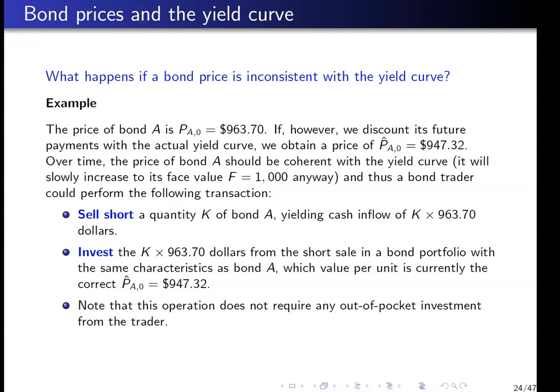If prices increase, A-hat will increase more than A. So even if the trader loses on the short sale, he makes far more on the correctly priced purchase. If prices go down, profits from the short sale exceed the loss on the purchase. The trader invests K × $963.70 into assets worth $947.32. After one year, both prices converge to P1. The profit on the short sale is K × $963.70 minus K × P1; the return on the bond portfolio is (P1 − 947.32) / 947.32.